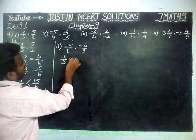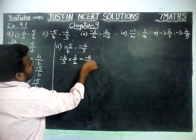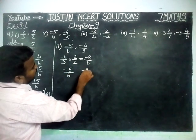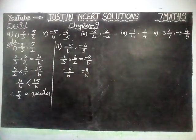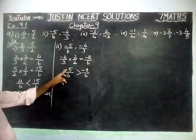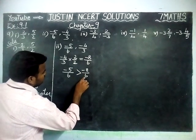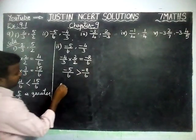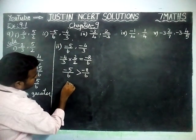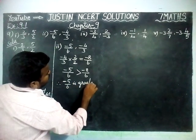-4/3 multiplied by 2/2 is equal to -8/6. Now we have -5/6 and -8/6. When using negative numbers, we have to find the smallest absolute value. So -5/6 is the greatest value compared to -8/6. Therefore, -5/6 is greater.